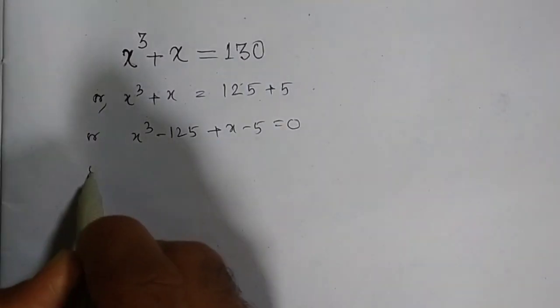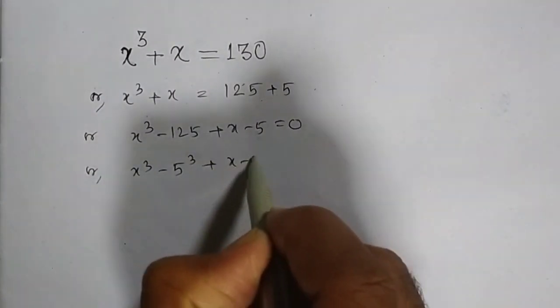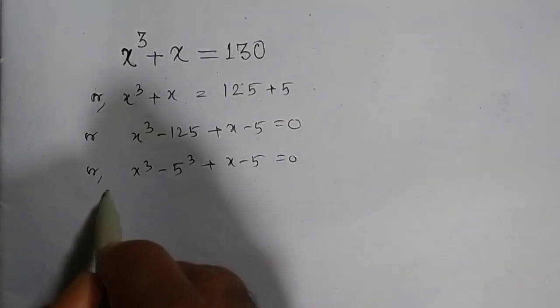This equals 0, or x³ - 5³ + x - 5 = 0. Now by the cubic formula we have...